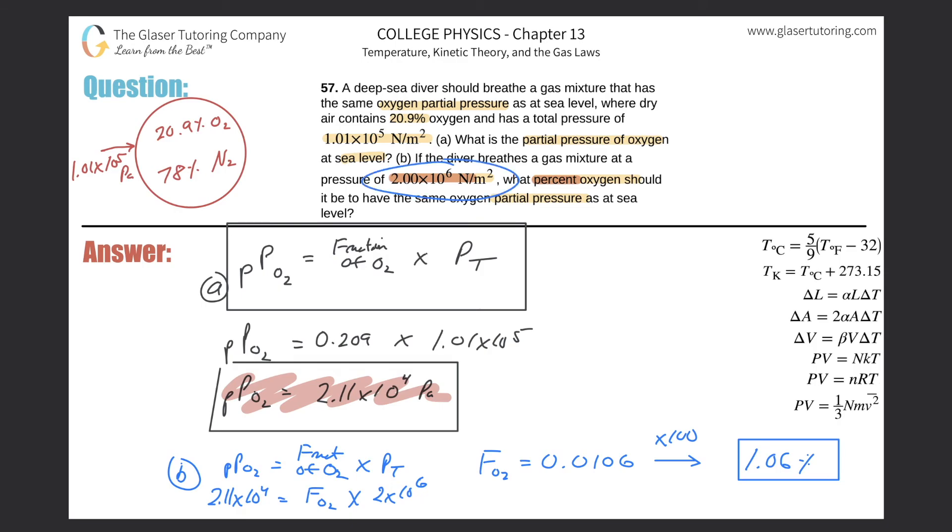What am I trying to say? I'm trying to say if I have a certain volume of air, and I know the total pressure of this air is 2.00 times 10 to the sixth.